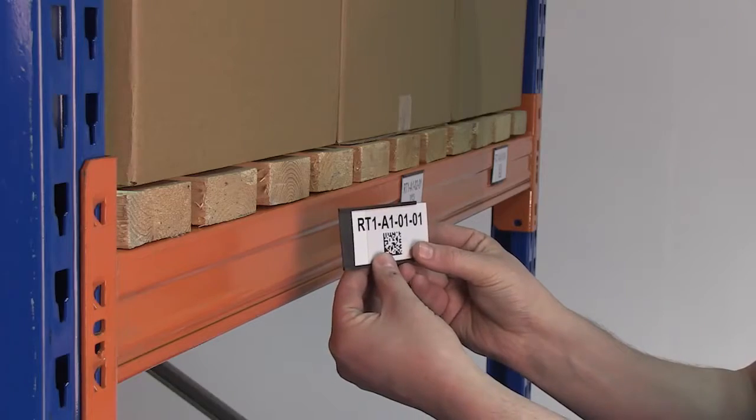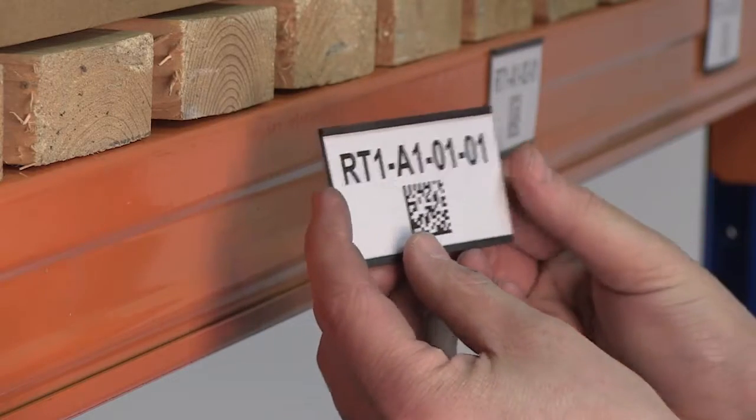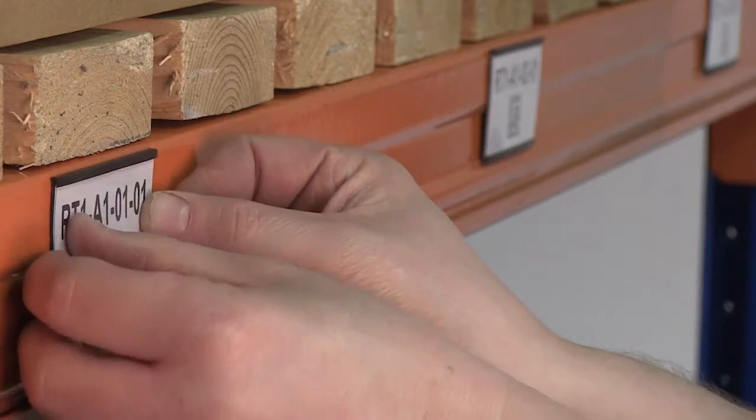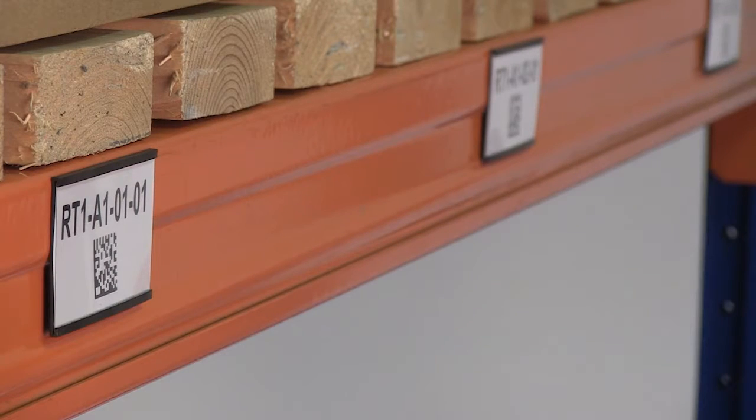RC section label holders allow the label to slide in from the side of the holder and include a clear PVC cover strip to keep the label clean.